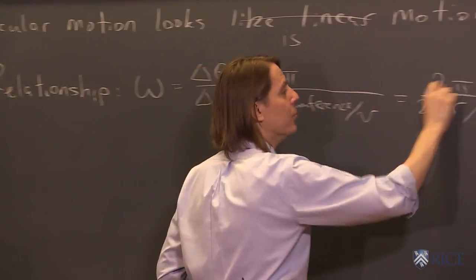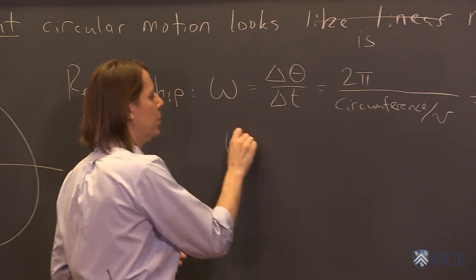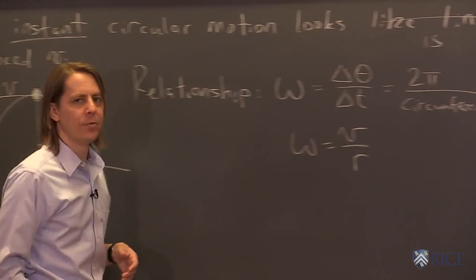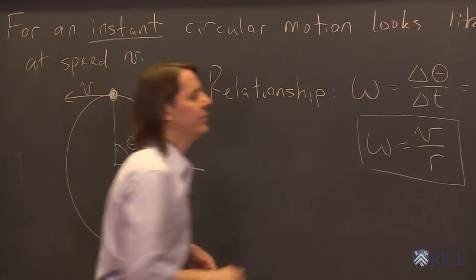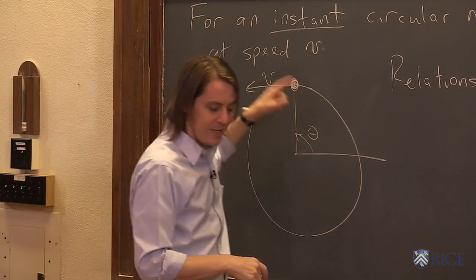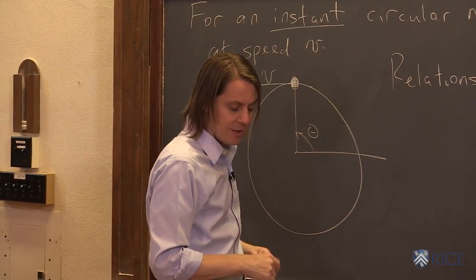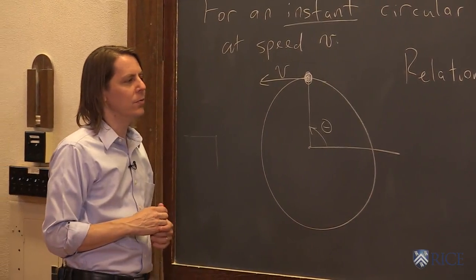Oh, okay, the 2π's go away. This is why we like to use radians. It makes the formulas prettier. So omega, apparently, is just equal to v over r. This is the relationship between the angular velocity of something that's undergoing uniform circular motion and the speed, essentially the linear speed, as it goes around the circle. Omega equals v over r.